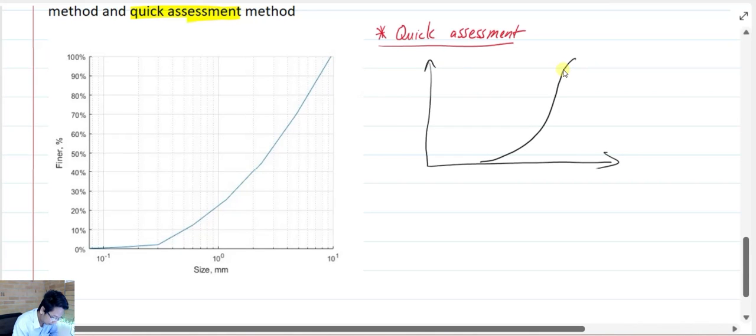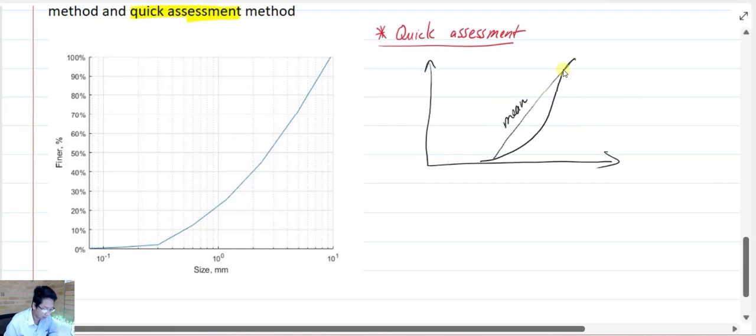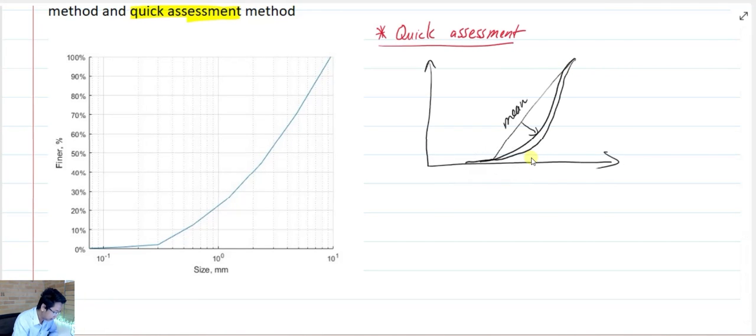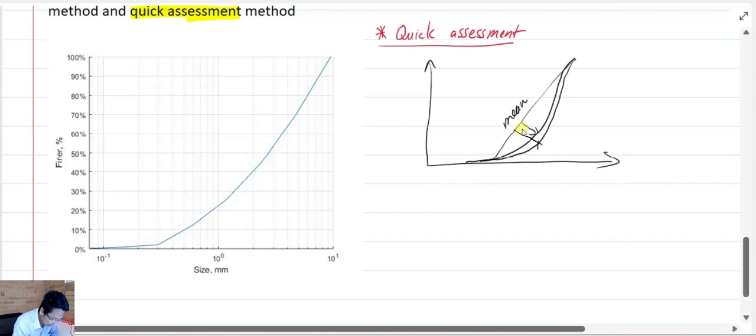So the idea of this quick assessment method is that it tries to assess how far the soil bends from the mean slope. This here is your mean slope. And they want to assess this distance, how far it bends. If it bends way too much like this, that means it's going to have a very long tail that can be eroded. And it is based on the furthest point that is furthest from the mean slope.